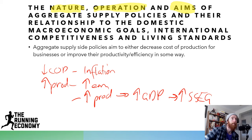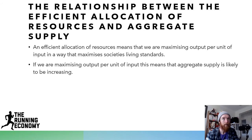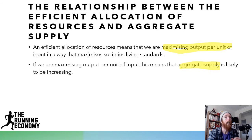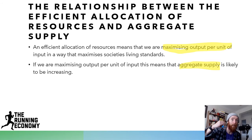Aggregate supply-side policies aim to either decrease the cost of production for businesses or improve their productivity or efficiency in some way. The efficient allocation of resources means maximizing our output per unit of input in a way that maximizes society's living standards — mainly allocative efficiency, but also technical or productive efficiency, dynamic efficiency, and intertemporal efficiency. If policies lower cost of production, that improves productive efficiency. Many supply-side policies move production into areas where it is needed, such as subsidies for solar panels, making us more dynamically efficient. By making us more productive, there are more resources left for future generations, making us more intertemporally efficient.